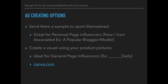We can also create a visual with our product pictures. This is ideal for general page influencers — pages like 'watches daily,' 'dogs daily,' or 'cats daily.' These pages are not associated with a direct face or icon; there's no direct person associated with it. It's just blogging or posting pictures and content about a certain topic. People are constantly following these pages for content related to that topic. So you can come in and put your offer on the table — for example, your latest cat t-shirt that cat lovers would love to purchase.